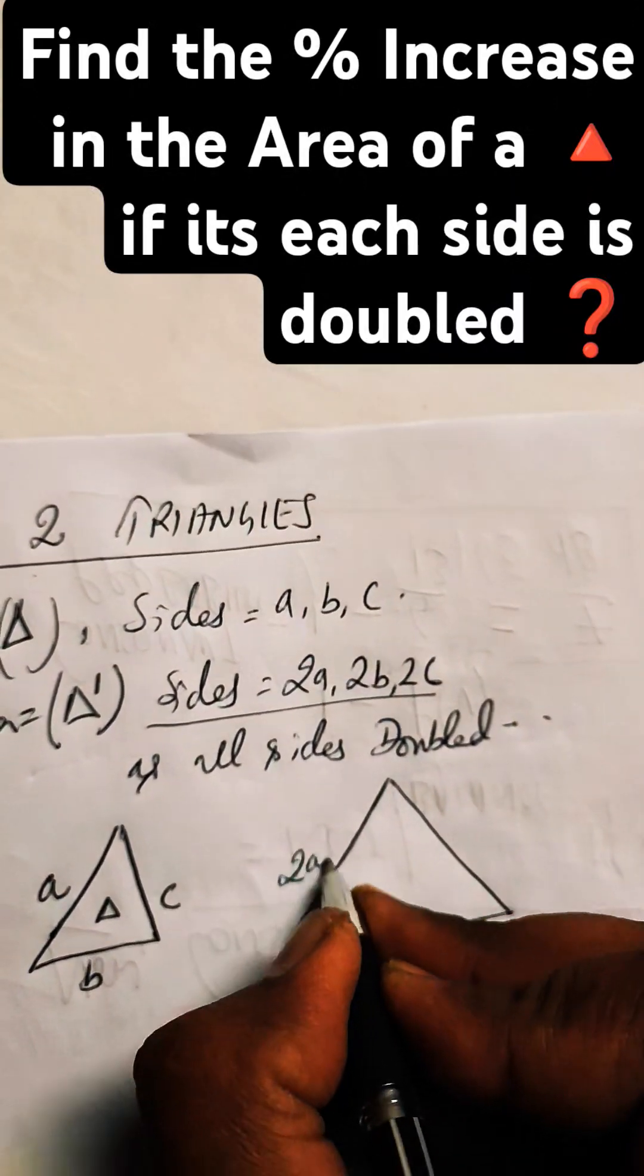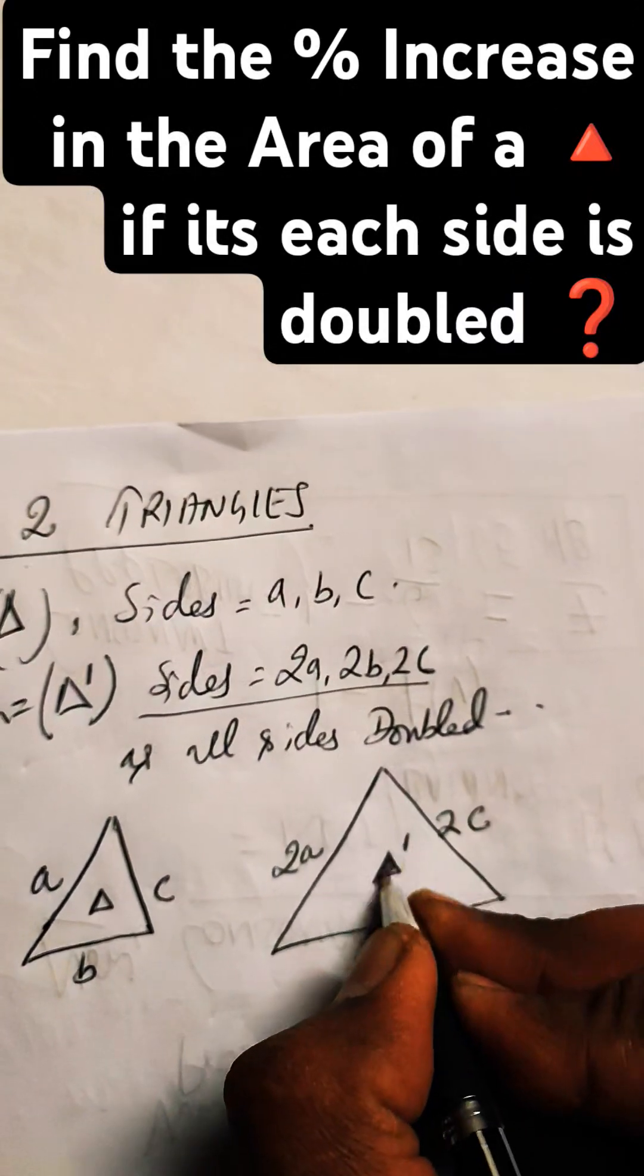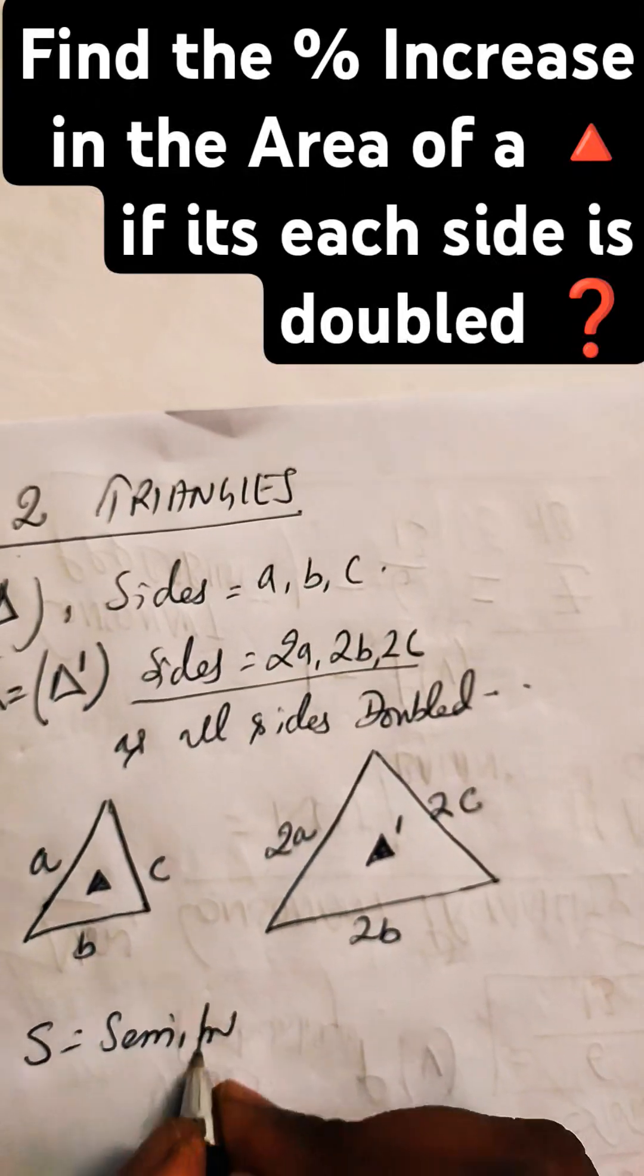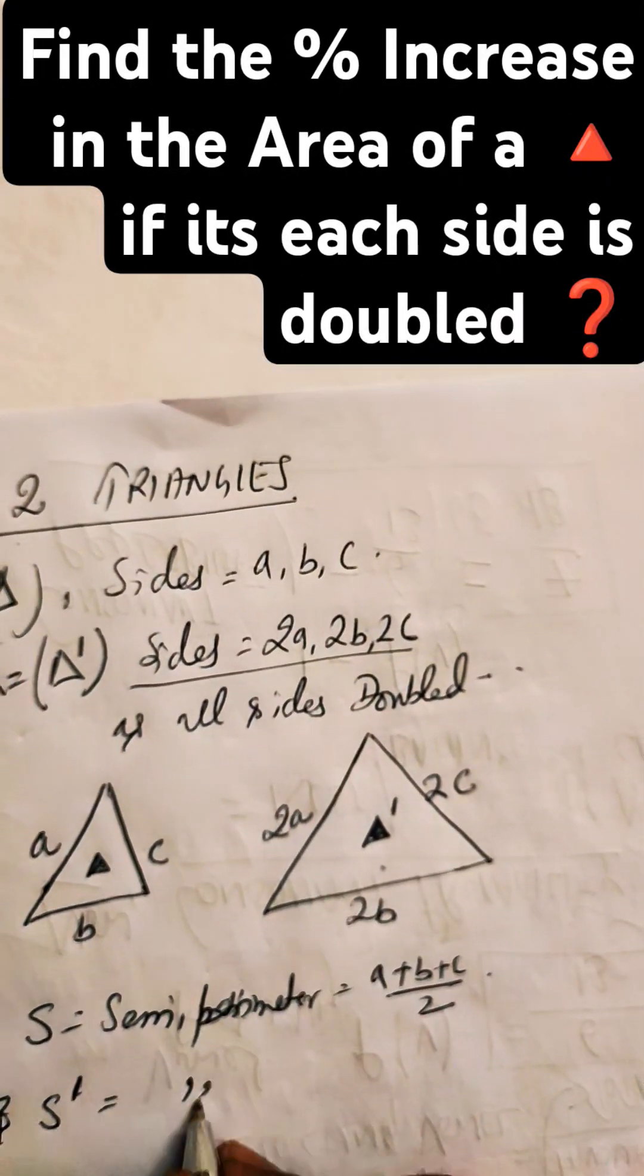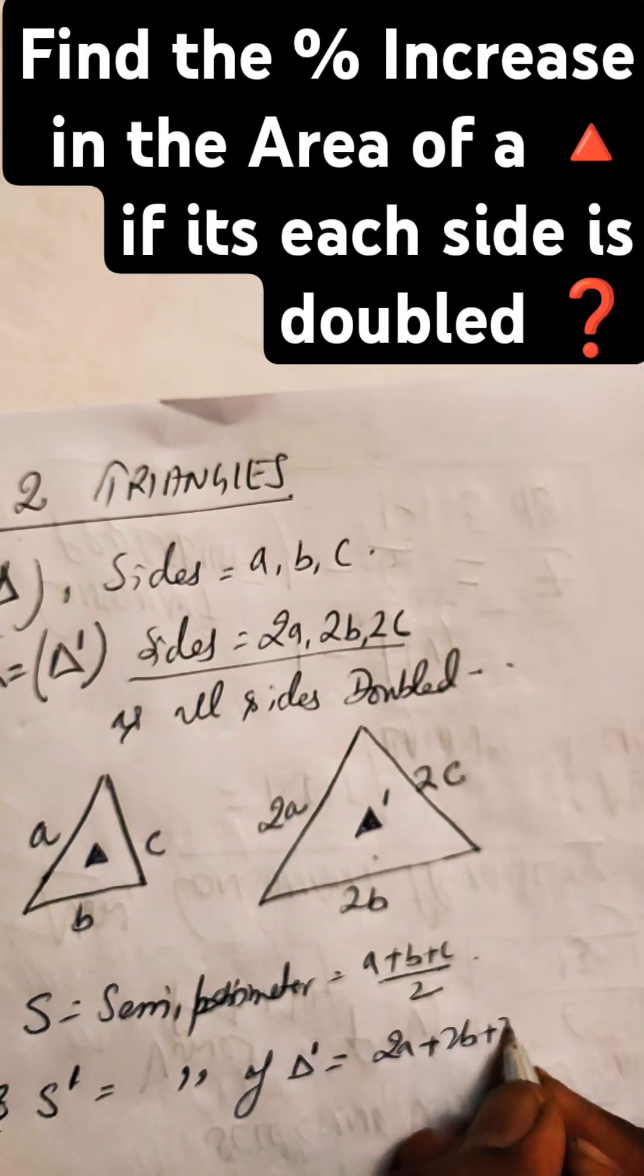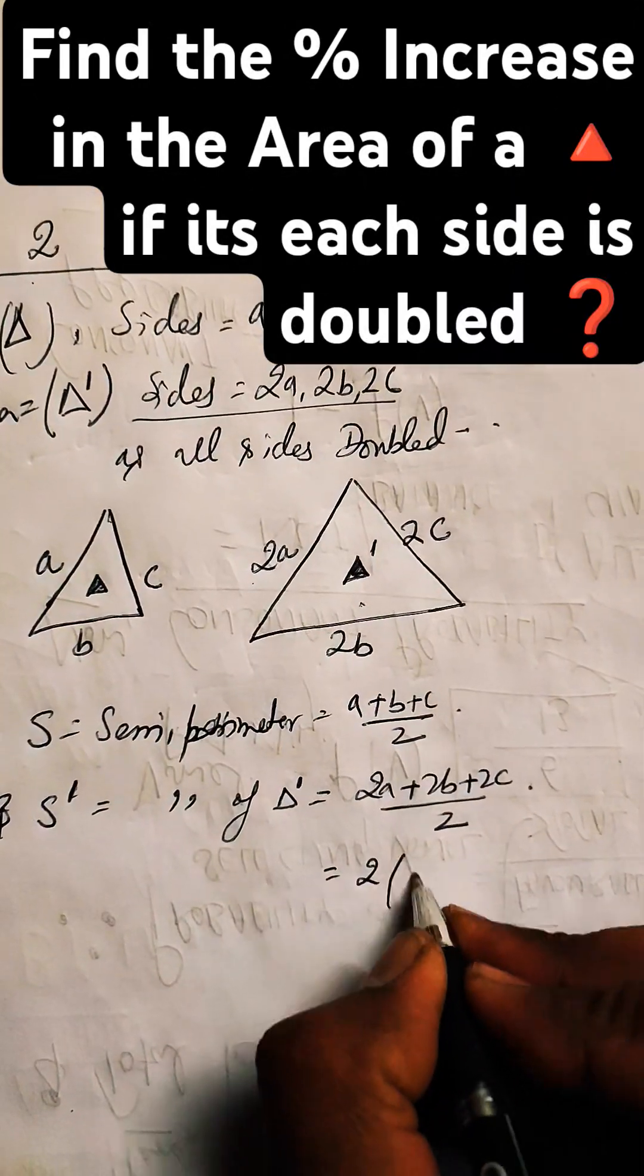The formula for semi-perimeter is the sum of all sides of a triangle divided by 2. We calculate both semi-perimeters: S for the initial triangle, and when the sides are doubled, the new semi-perimeter is S'.